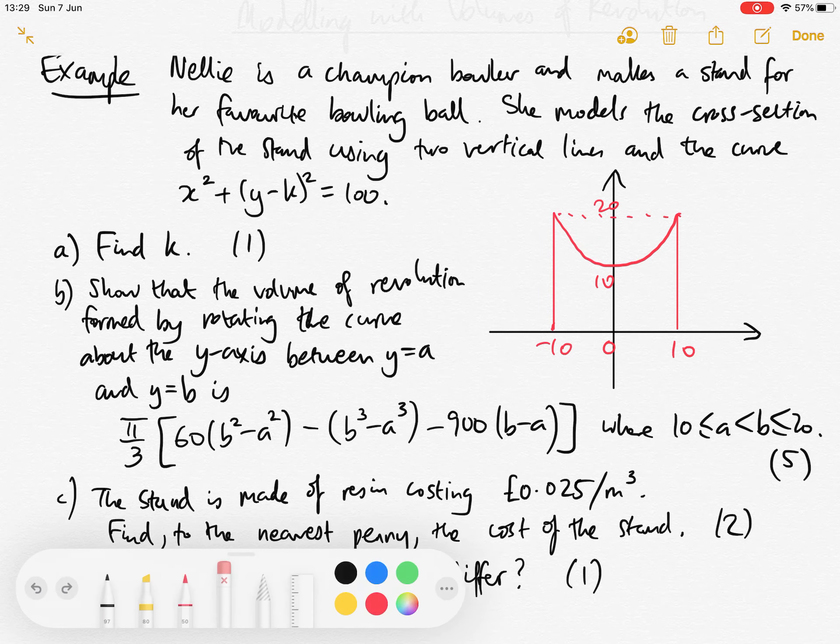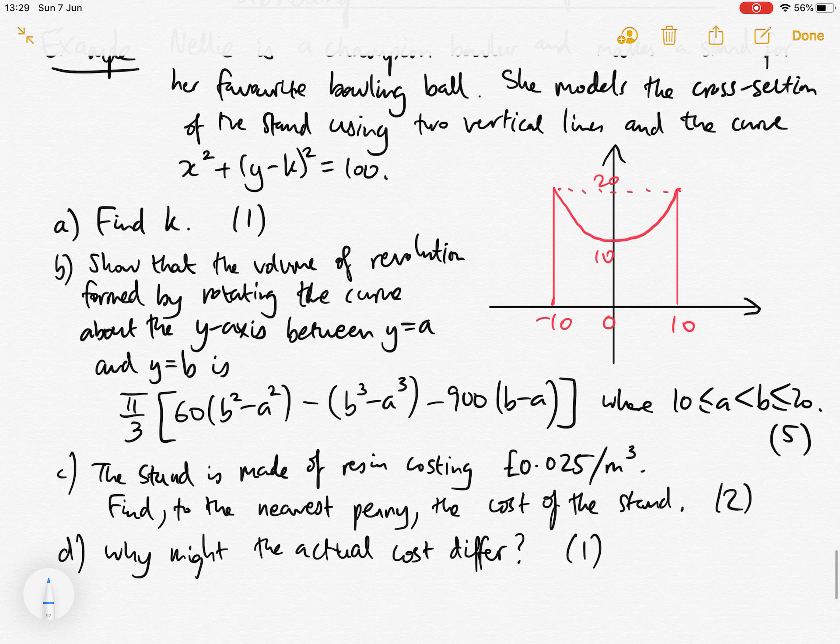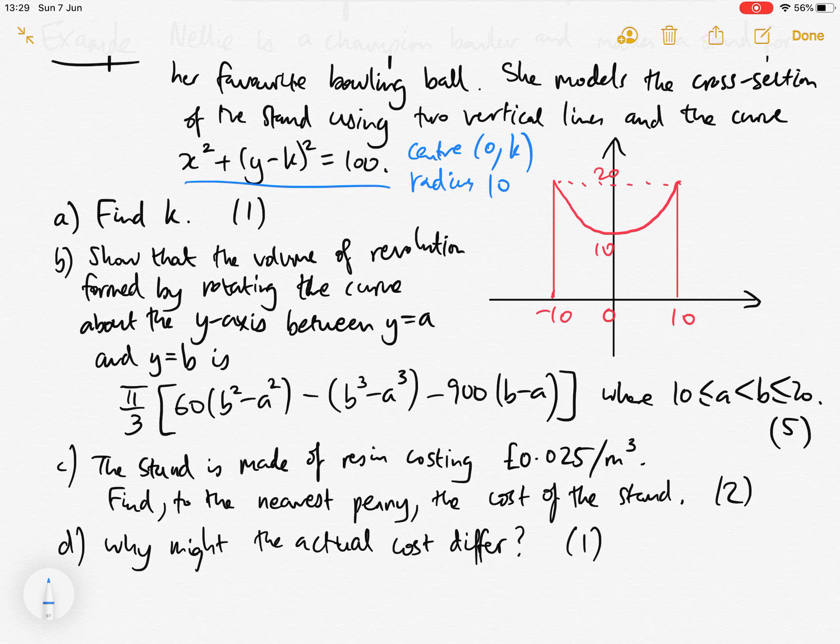The first part of the question is to find k. Notice that this curve is a circle centered at 0, k with radius 10. We know the point 0, 10 lies on the circle, so the only way 0, 10 could lie on the circle is if k is 20.